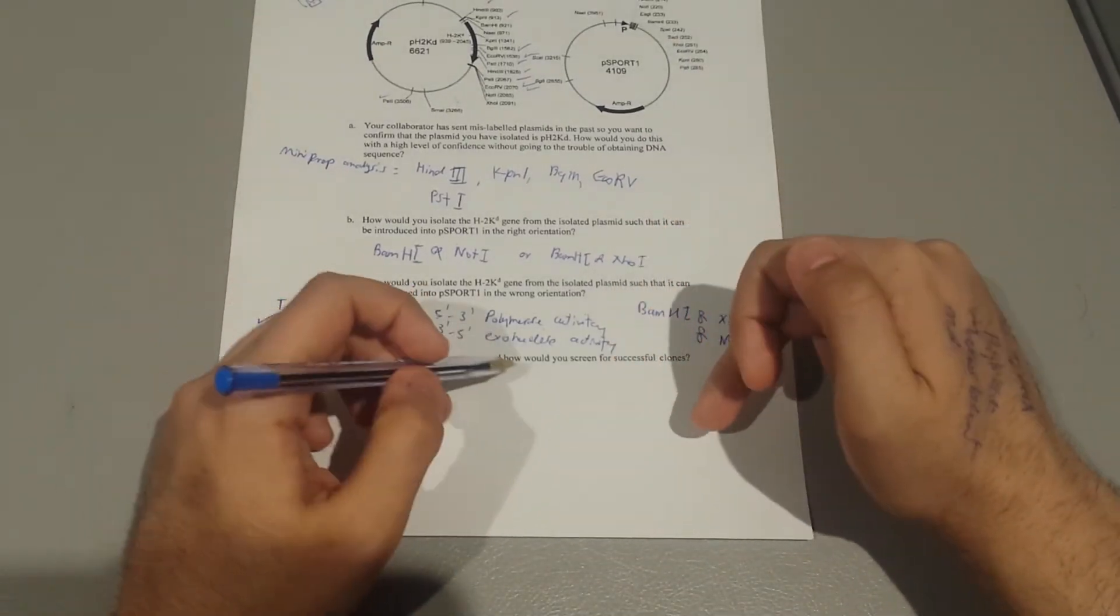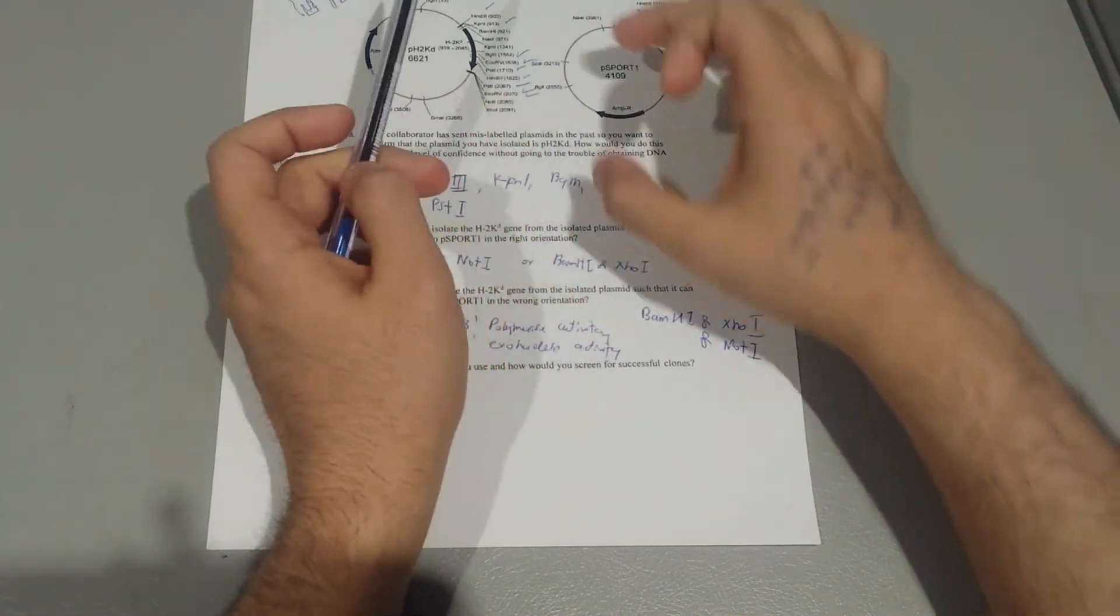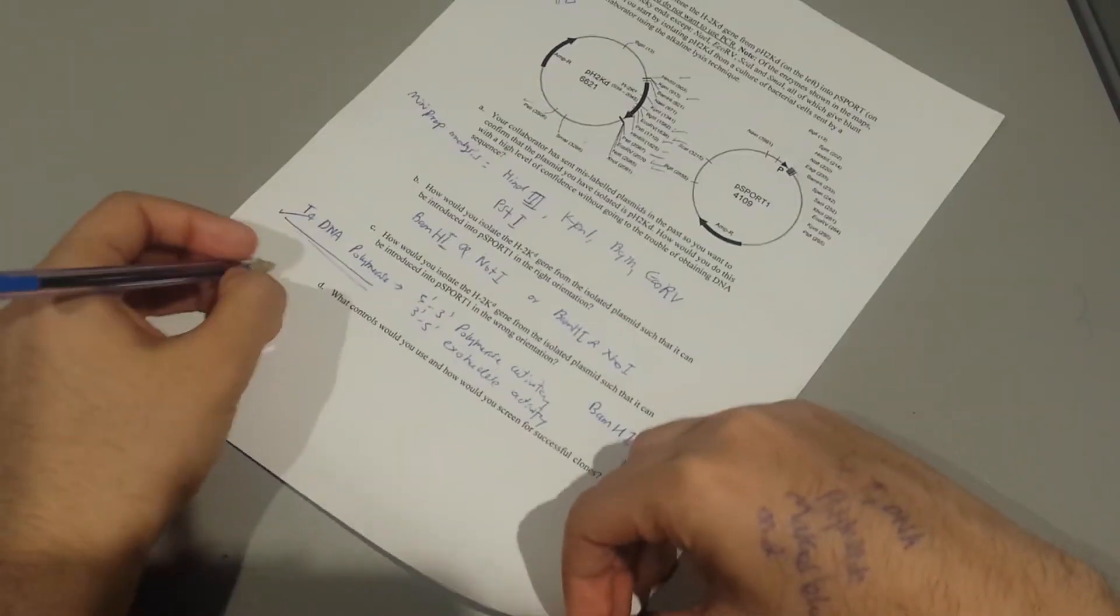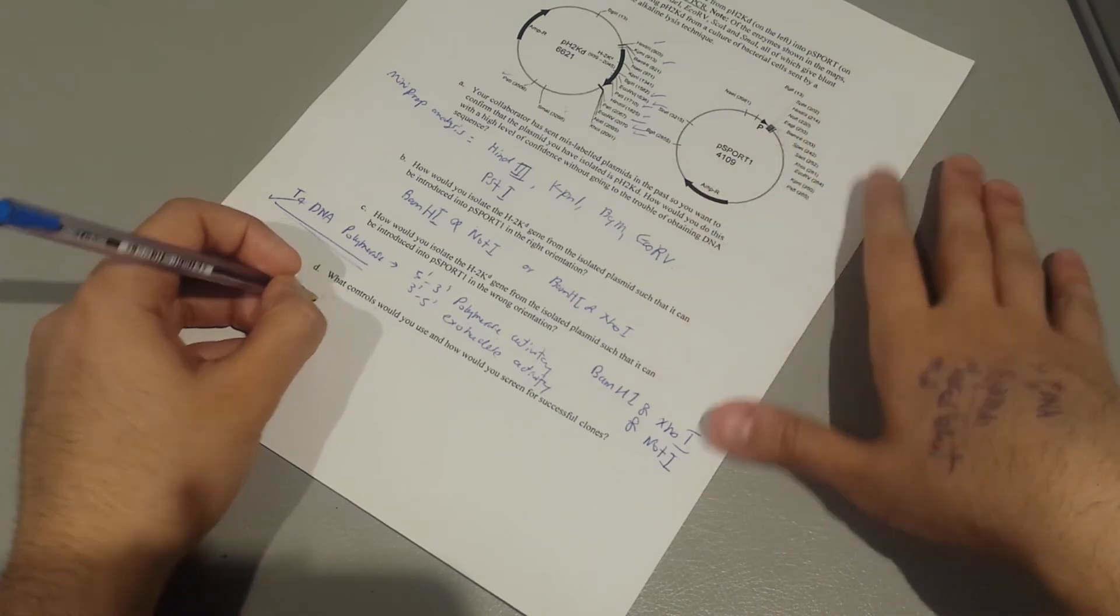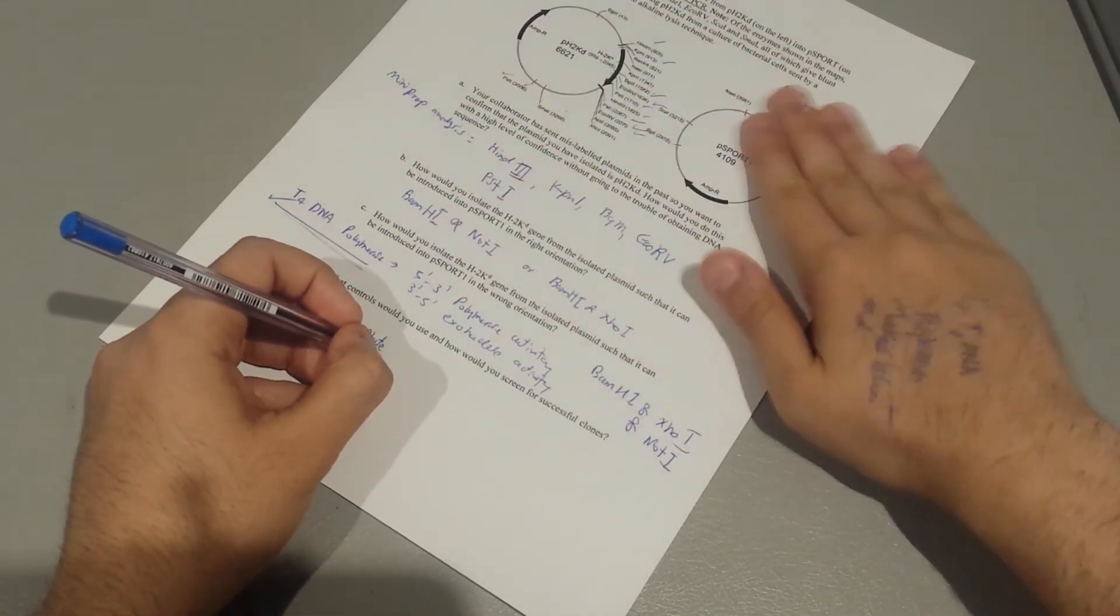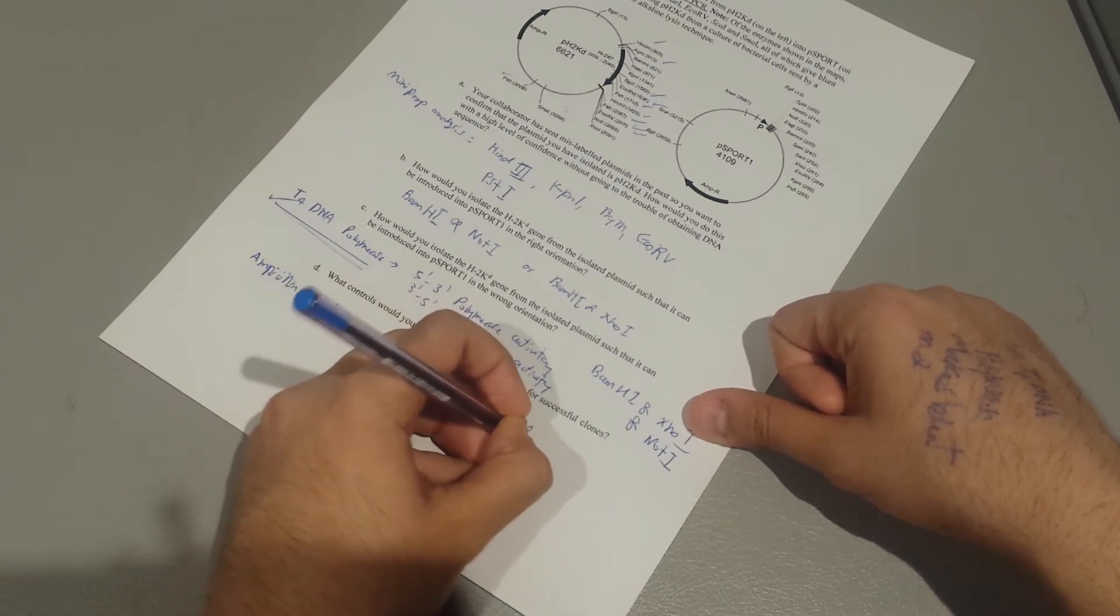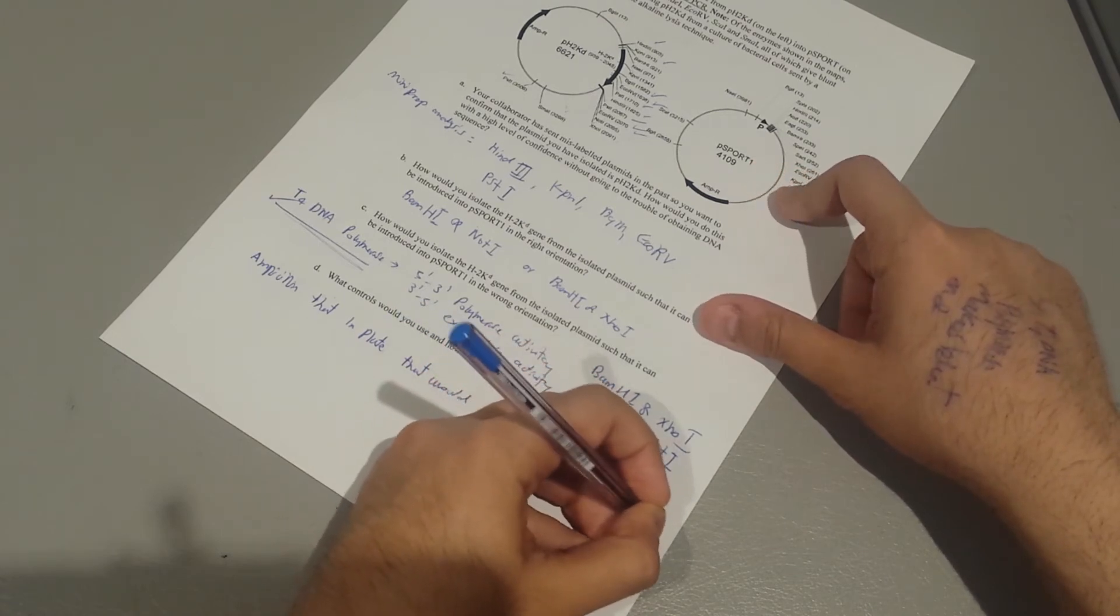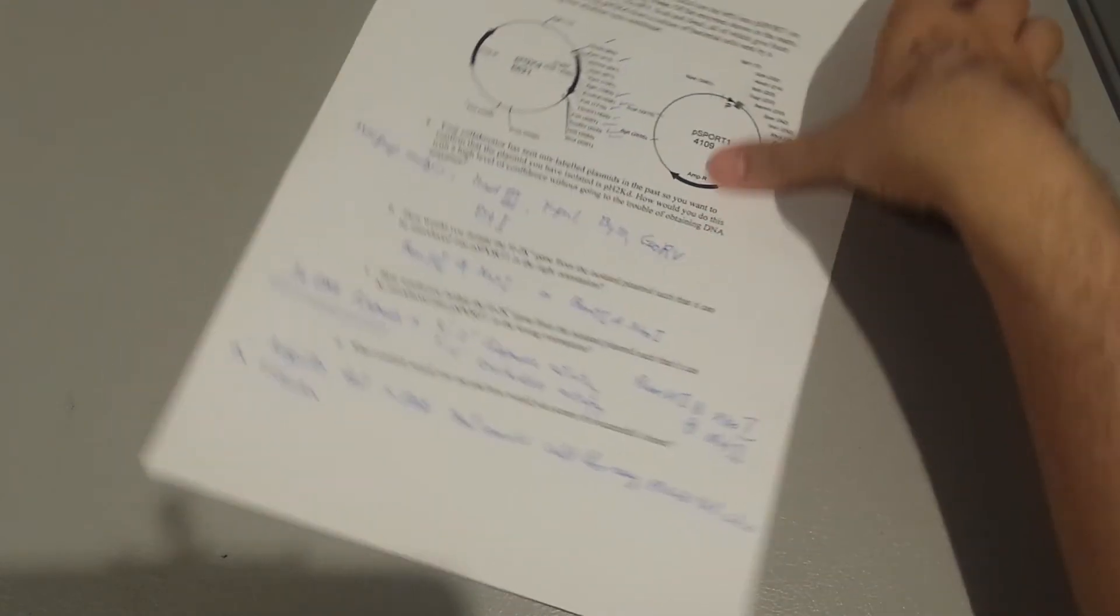Lastly, it says what controls would you use, how would you screen for successful clones? So you transfer this gene into this one, how can you be sure that this is the plasmid that contains this gene? There's a couple of things we can do. For example, you can have the ampicillin-containing plate, the ampicillin that is already being plated on the agar plate.